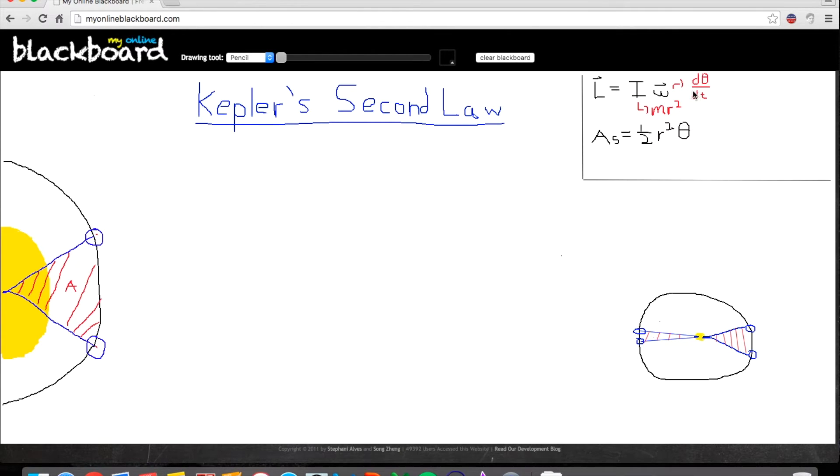Omega, by definition, is d theta over dt. Omega is the rotational velocity, so it's the change in theta over change in time. In the same way, the velocity is the change in distance over change in time. This is literally just taking these units and converting it into rotation.